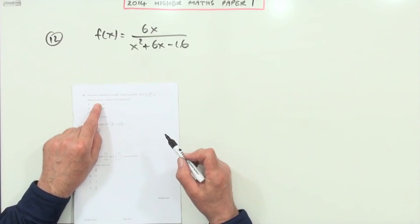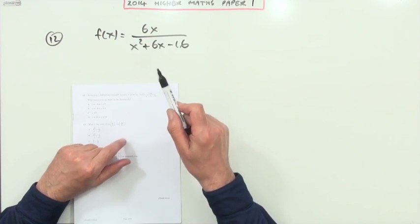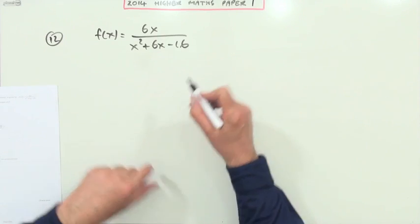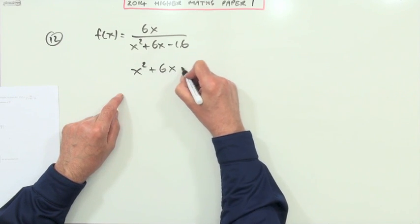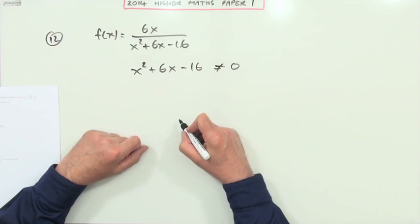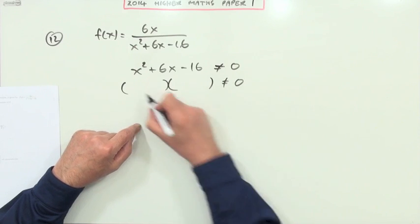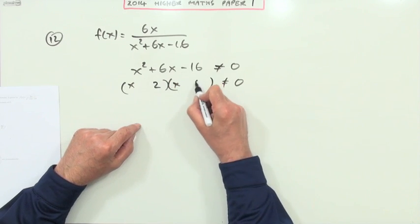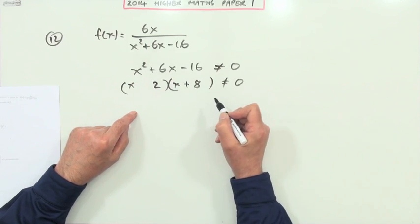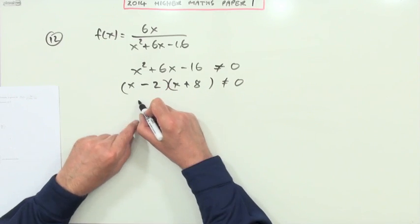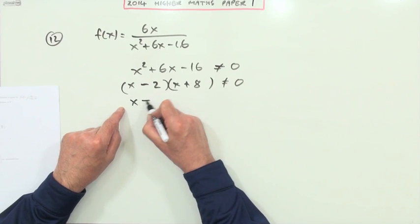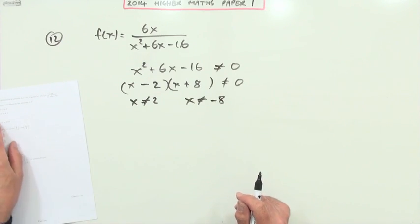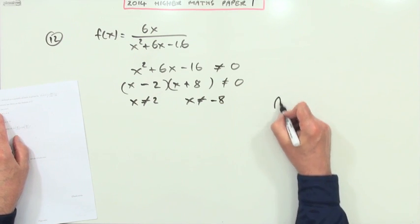Number 12: what restrictions are there on the domain? You can't put in a value that makes a denominator equal to zero, so x² + 6x - 16 cannot equal zero. Factorizing: we need two numbers that multiply to 16 with a difference of six, and the bigger one is positive — giving (x - 2)(x + 8) = 0. Therefore x cannot be 2 and x cannot be negative 8. That's answer A.